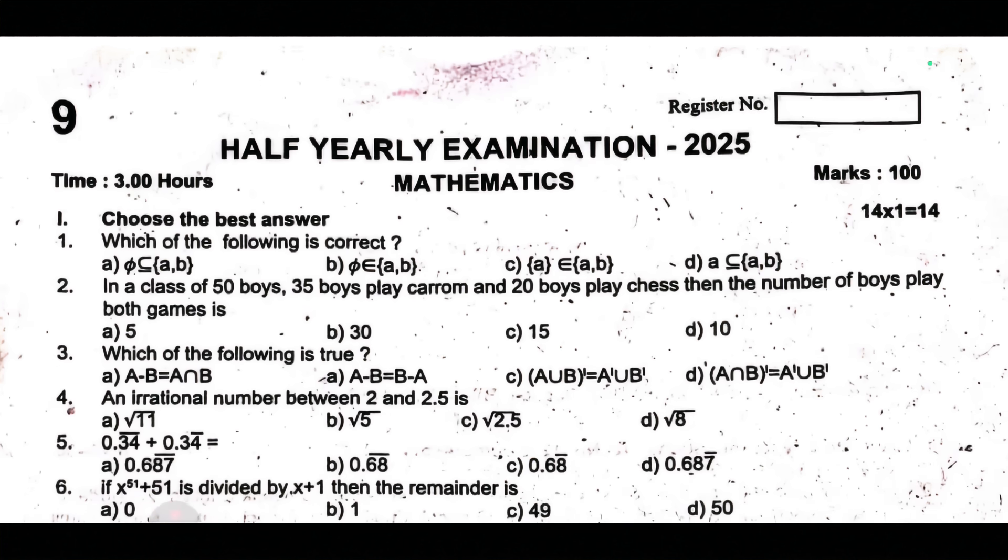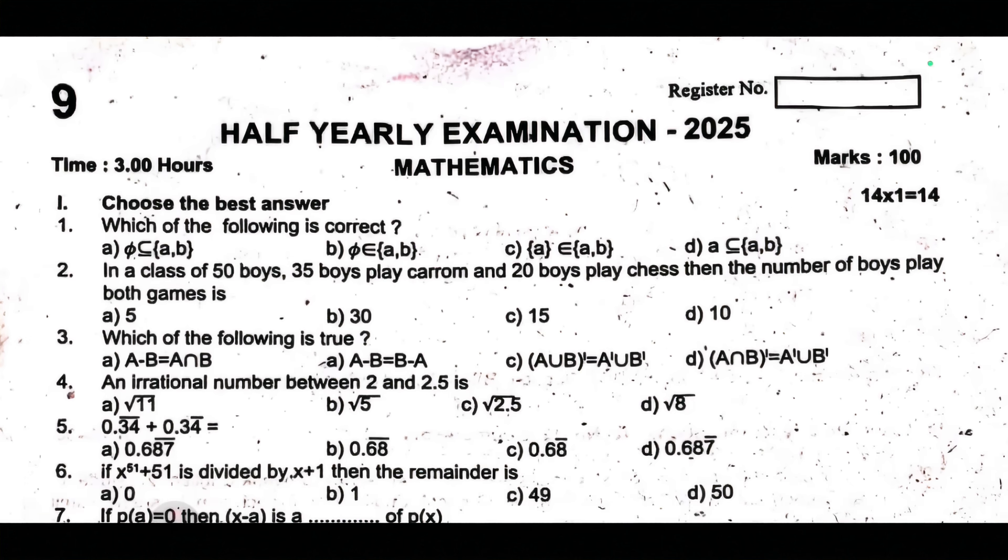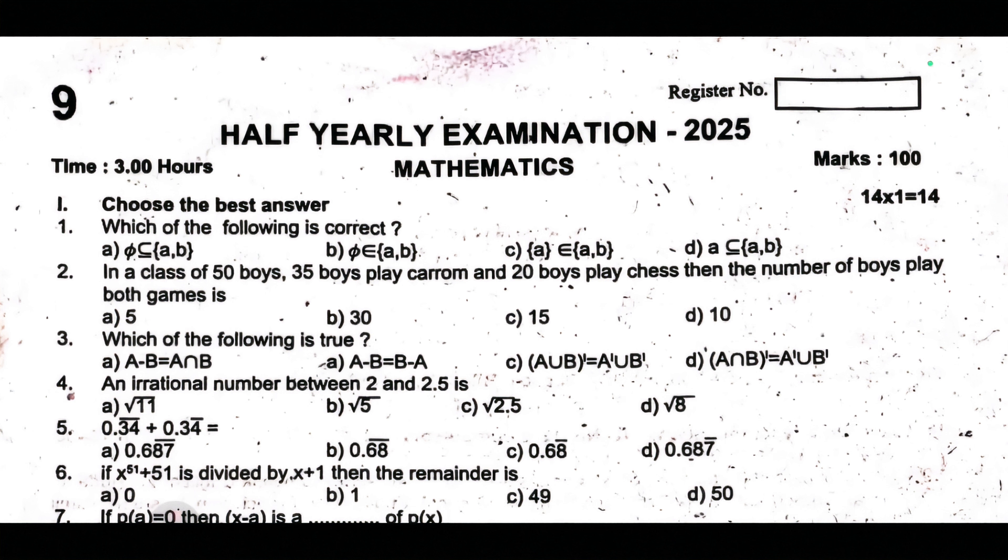Which of the following is correct? Second one, in a class of 50 boys, 35 boys play carom and 20 boys play chess.